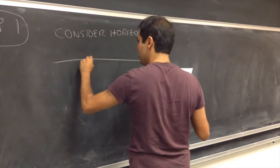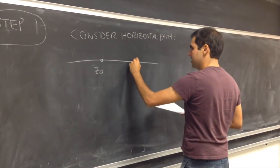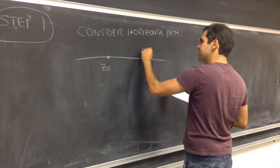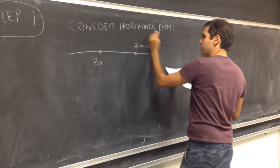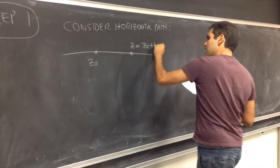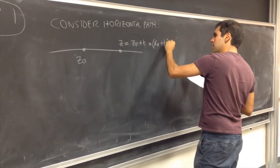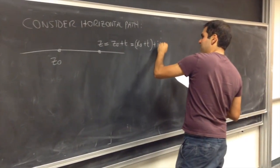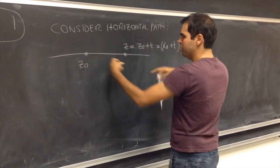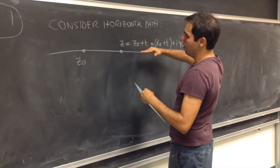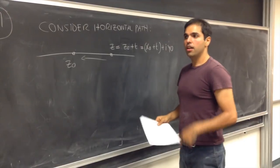Namely the following: you start with z-naught and you go horizontally. Suppose z is of the form z-naught plus t, which is really x-naught plus t, plus iy-naught. Namely, all you do is just go horizontally from z to z-naught.